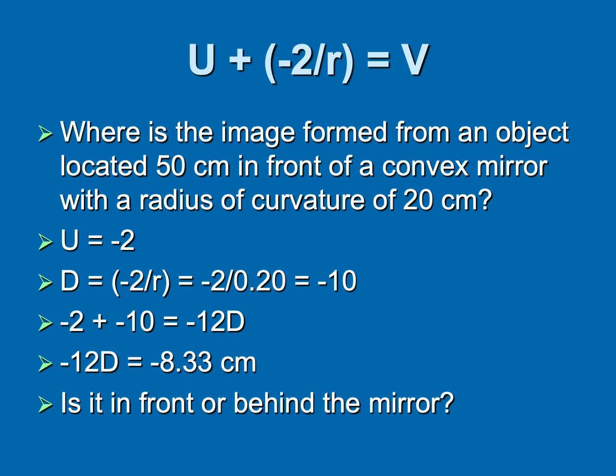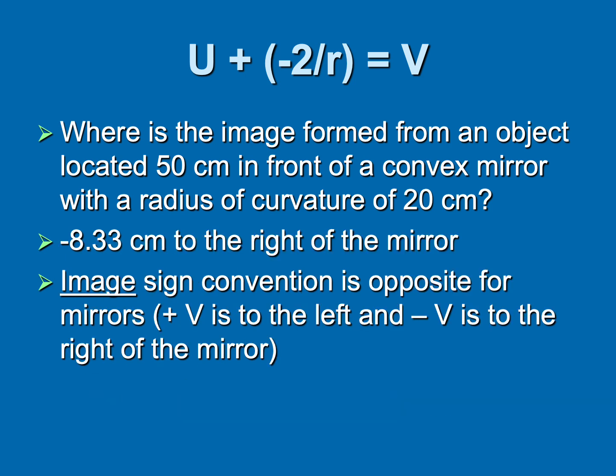Where is u? u is 50 centimeters in front of a convex mirror. We know that 100 divided by 50 is going to be minus 2. Now we can figure out what d is because we know the radius of curvature. We've converted centimeters to meters and we've come up with a value of minus 10. We put it into u plus d equal v and we get our v is minus 12. But minus 12 is in diopters. We're asking for location. So we're going to divide that into 100 and get an answer in centimeters.